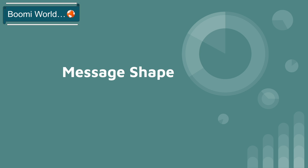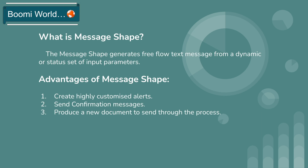First we can see what is message shape. The message shape generates free flow text messages from a dynamic or static set of input parameters. Message shape is one of the execute shapes. Execute shapes are used to transform the data, and same way message shape will transform the data from one shape to another shape.